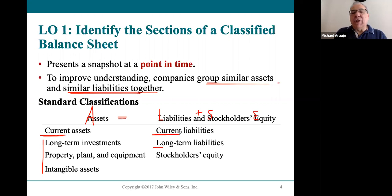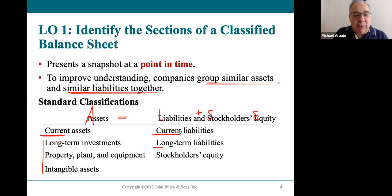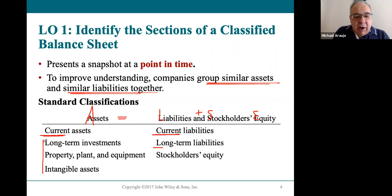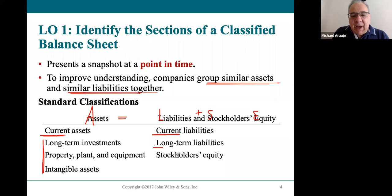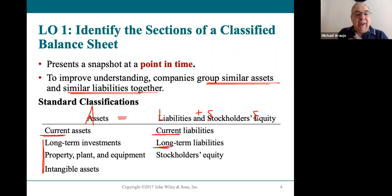A current asset is an asset that we are going to either turn into cash this year or use up this year. A current liability is a debt that we have to pay this year. Anything over one year in accounting is considered long-term. There are many long-term assets — so many that they've broken them into three classifications — but there is only one classification for a long-term liability.